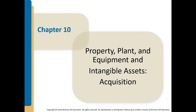Hello everyone. This video records several sections from the beginning of Chapter 10 in Intermediate Accounting. We're going to talk about property, plant, and equipment and intangible assets. Any kind of PP&E and intangible assets are going to be long-lived assets — something that lasts at least more than a year and is expected to bring in revenue in the future.